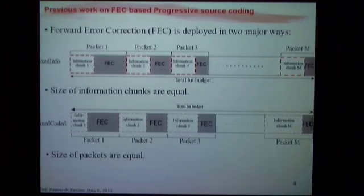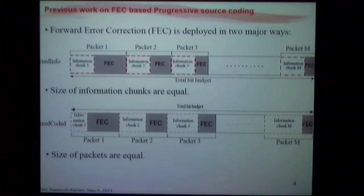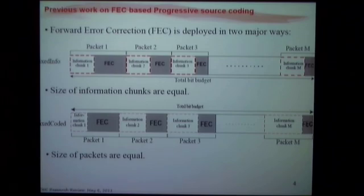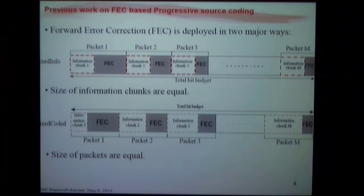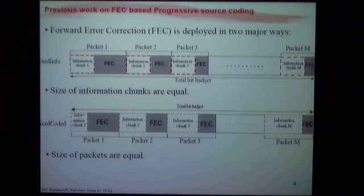There are several studies in the past for error correction-based embedded bit stream transmission over noisy channels. Two of these are called fixed info and fixed packet. Fixed info basically means you divide the source bit stream into equal-size information chunks and encode them by allocating more FEC for the more important information chunk. The second scenario fixes the packet size instead of the information chunk size, so packet sizes are fixed but information chunk sizes can be variable. Again, you put more FEC for information chunk one, since information chunk two is only useful when information chunk one has been reliably received.